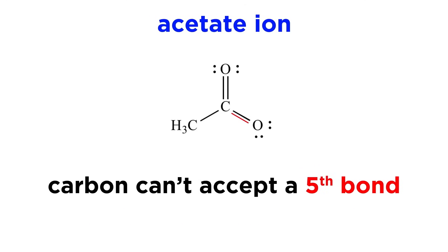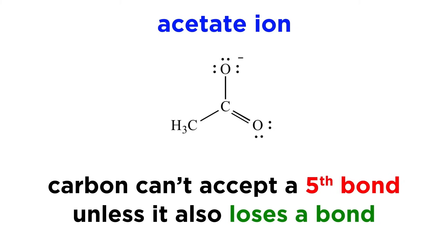Carbon is not capable of expanding its octet, but we can allow carbon to gain a bond if it also loses a bond at the same time. So let's draw another arrow going from this other pi bond up to this other oxygen atom, giving it a formal negative charge.